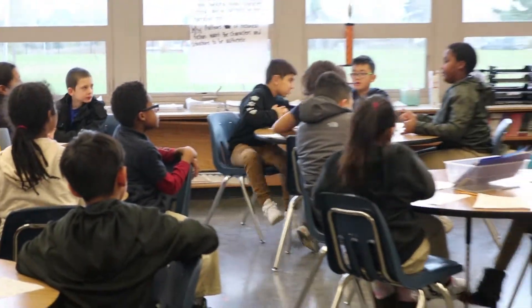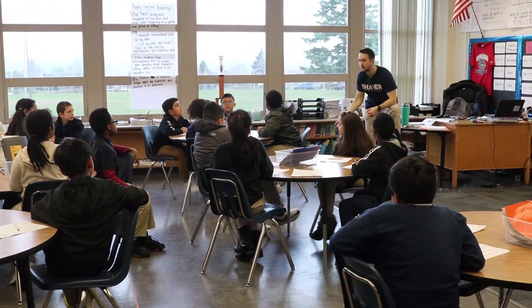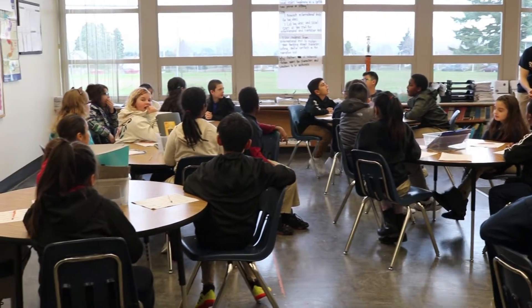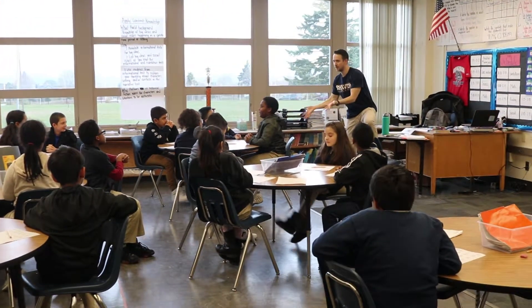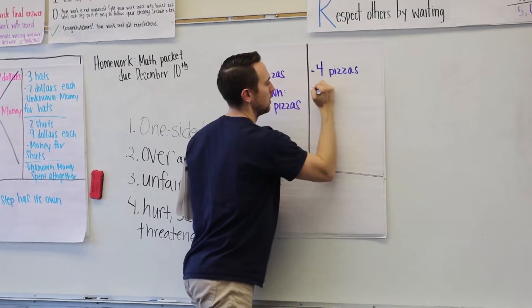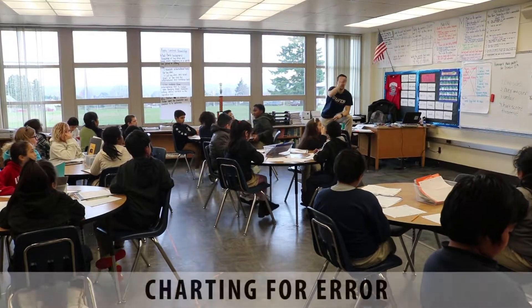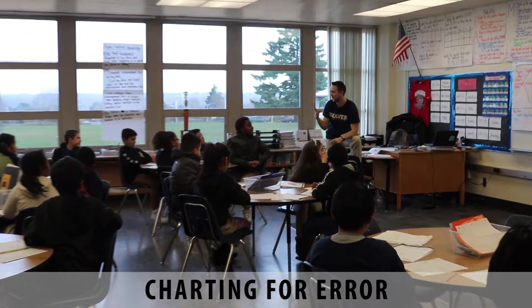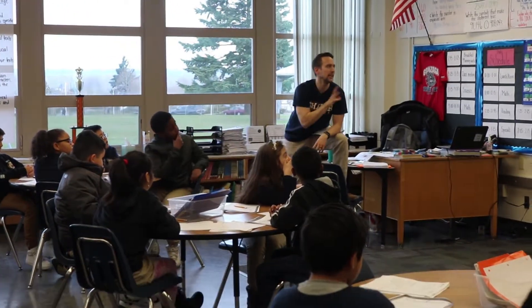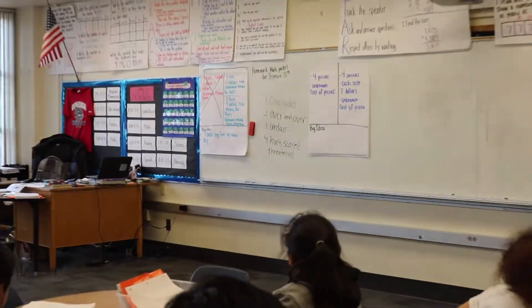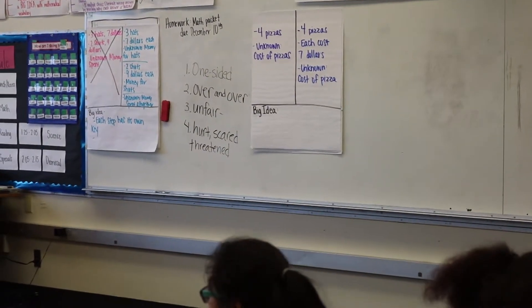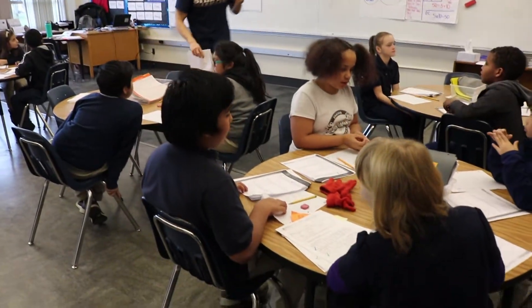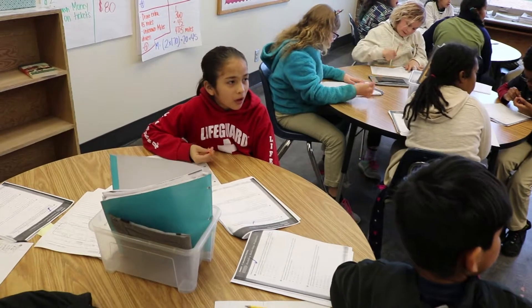In a multi-step story problem, it's not more than one problem — it's more than one step. You guys are amazing. I was going around to all the tables and I saw two different keys: the key in the purple and the key in the blue. Which one do we agree with and why? Turn to your partner — partner one, it's your turn again.